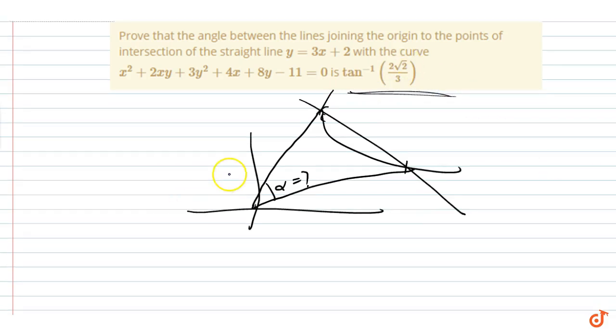Homogenization. Homogenization of the equation. Homogenization of the pair of straight lines. This is what homogenization is — let's see what happens.